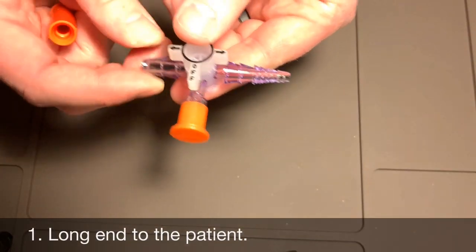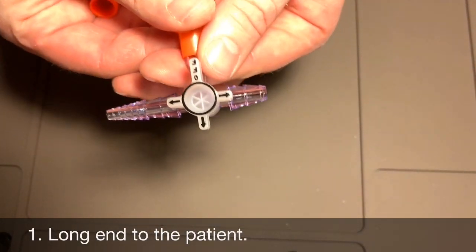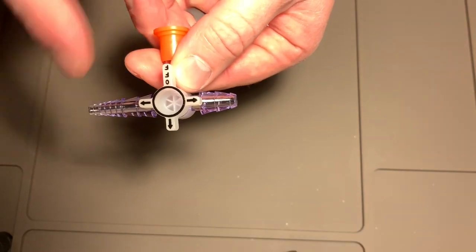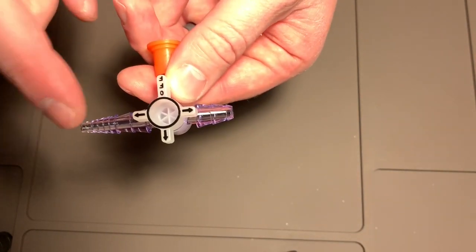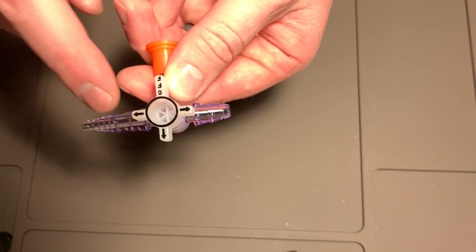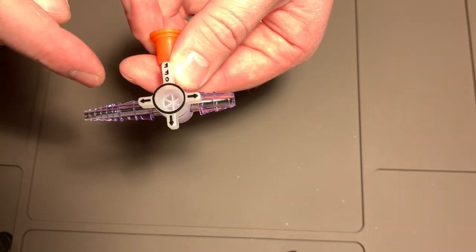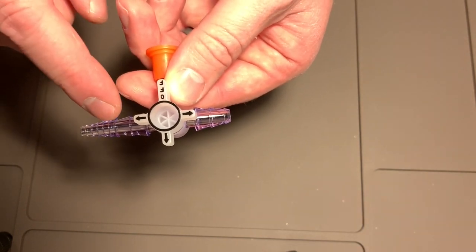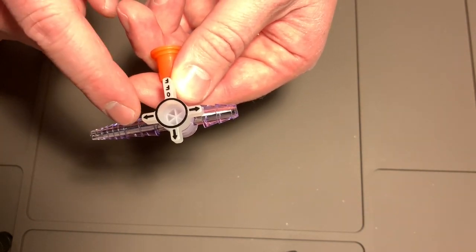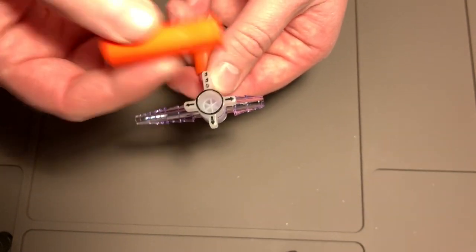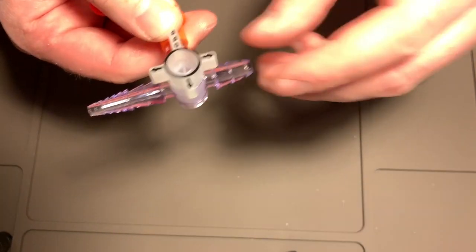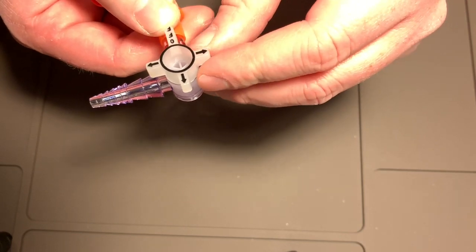Okay, tip number one. As you can see here on the valve, there's a long end and a short end. You want to put the long end into either your NG, OG, Dobhoff, whatever it is that's in the patient. You want to put this long end into that because your connector here, if you're going to hook this to suction, then your suction tubing is going to go right on here.